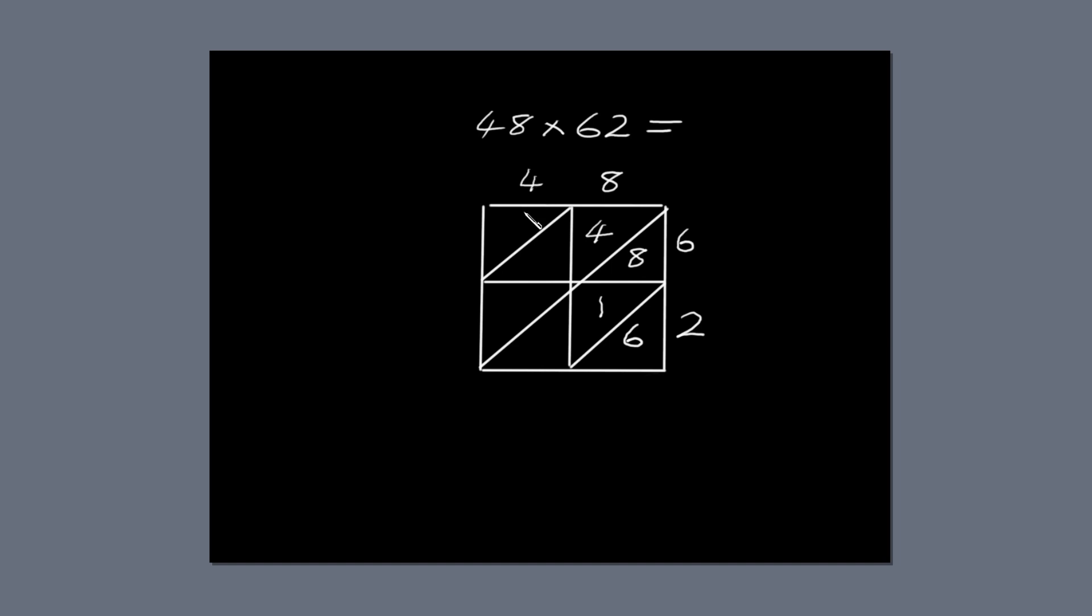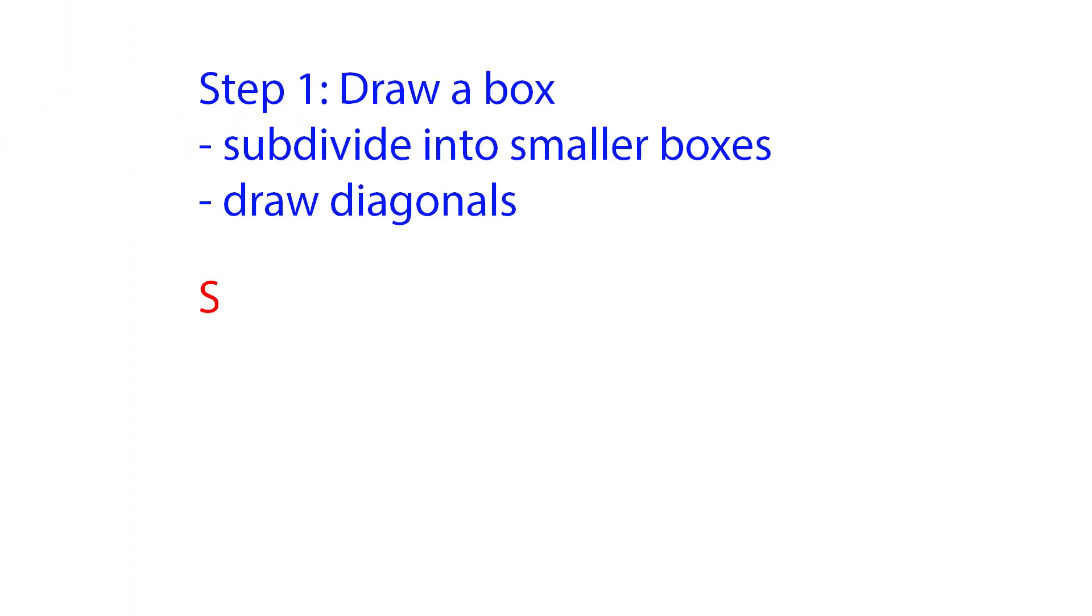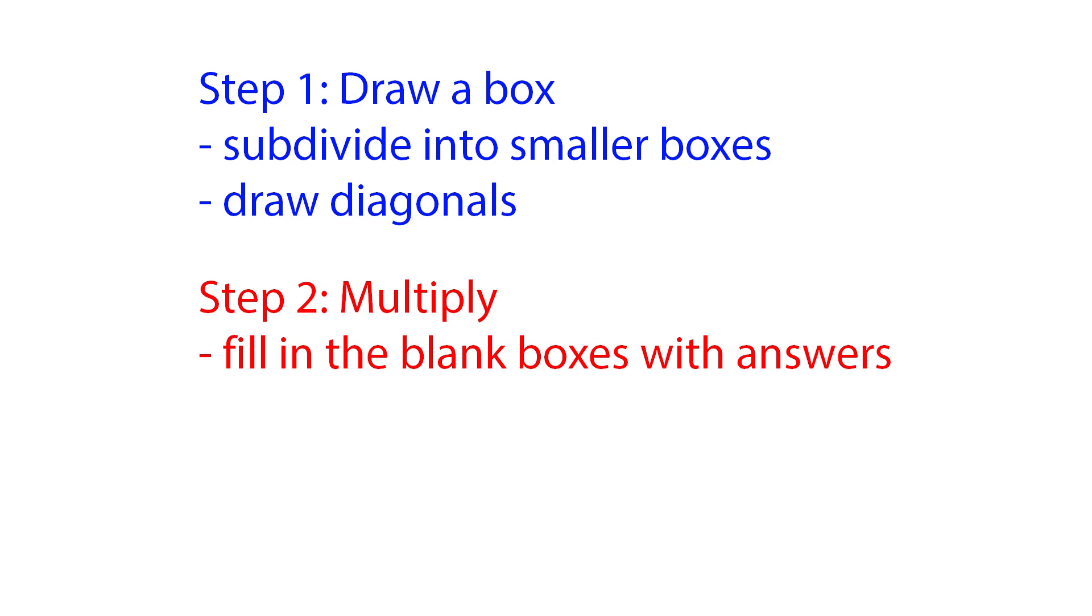Now let's fill in the blanks in the other column. 4 times 6 is 24. 4 times 2 is 8. 8 is less than 10, so this time put a 0 above the diagonal, and the 8 below. That's step two. Multiply and fill in the blanks with your answers.